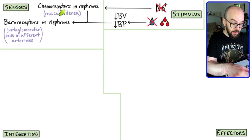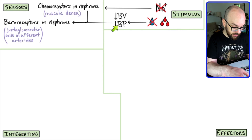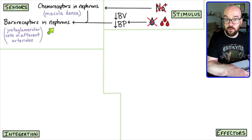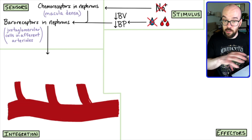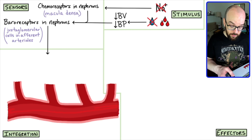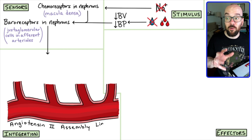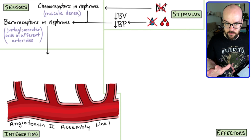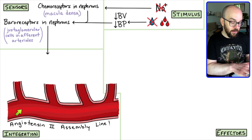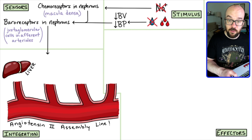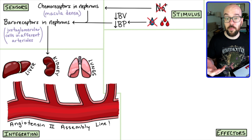So if there's a sodium deficiency detected by chemoreceptors in the macula densa, or if blood volume and blood pressure is low detected directly by the baroreceptors in the juxtaglomerular cells, those juxtaglomerular cells will do the next part of this process. We're setting up almost like an assembly line in the bloodstream to produce a chemical called angiotensin II — the main hormone that will travel throughout the body and cause lots of different effectors to raise blood pressure. Three organs are involved: the liver, the kidney, and the lungs.